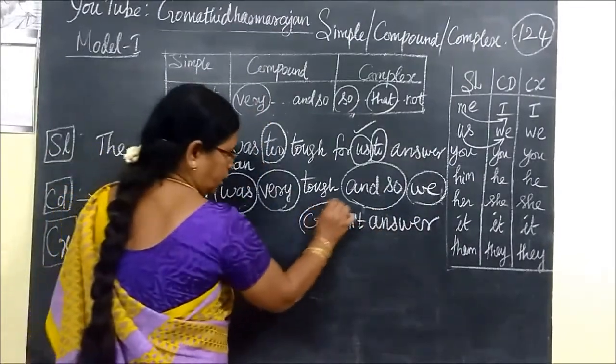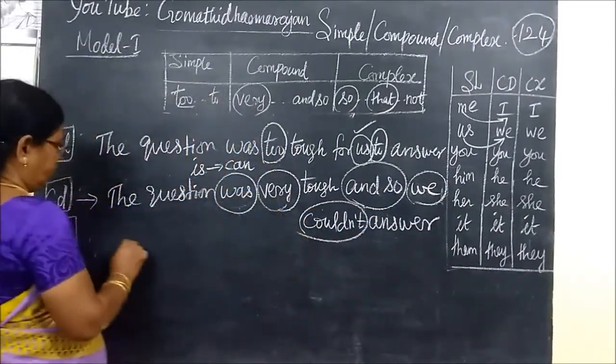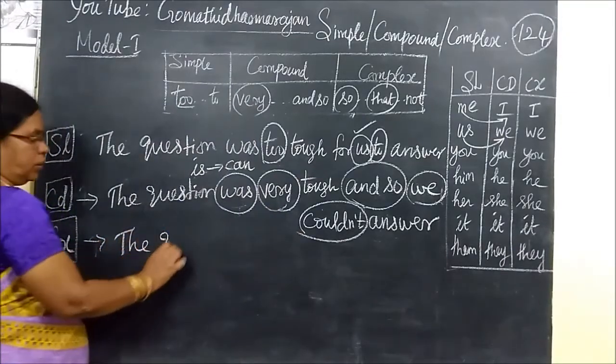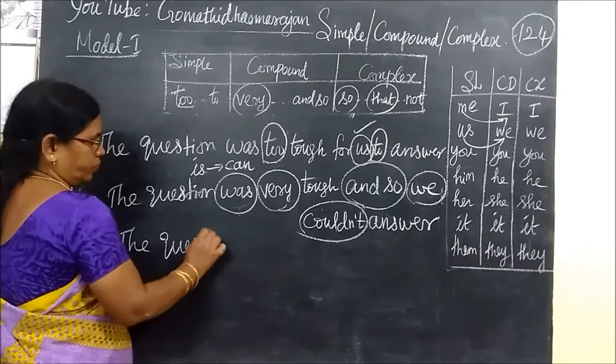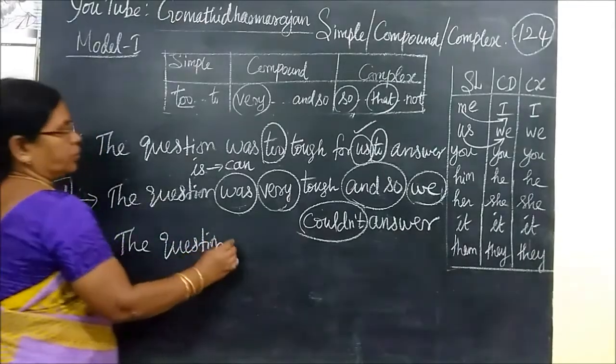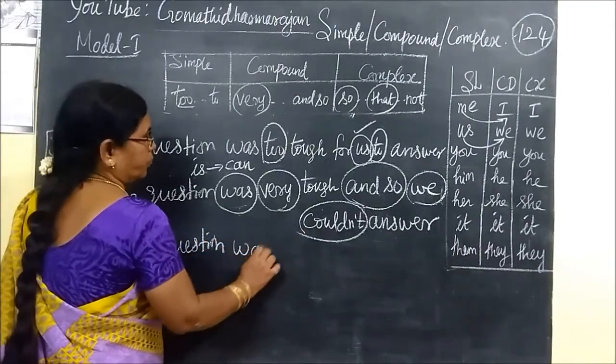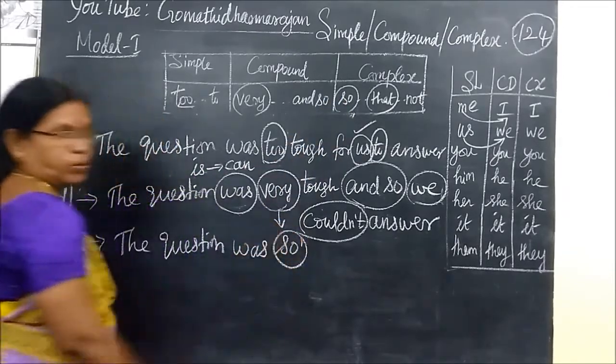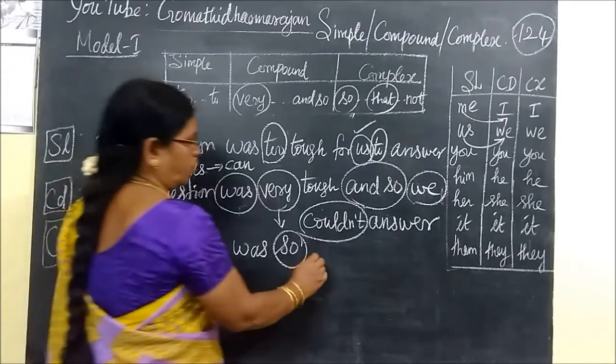So in that class. In the pudding. In the. Because it is easy. And this is for complex, the question was so, instead of very, you are writing so, the question was so tough.